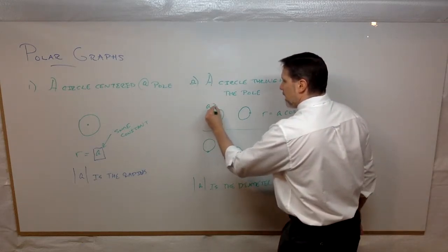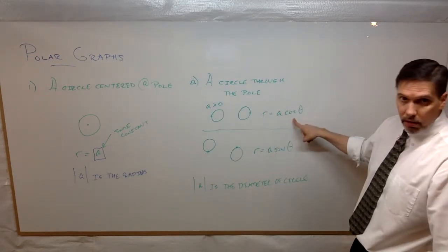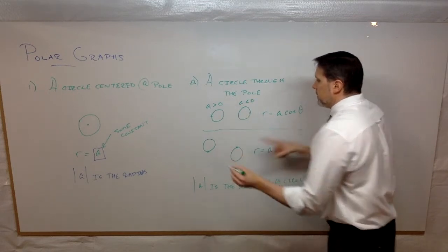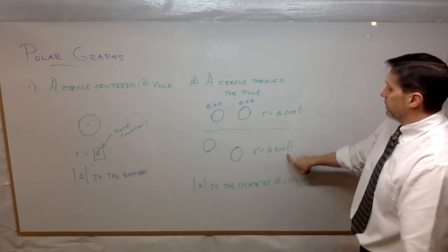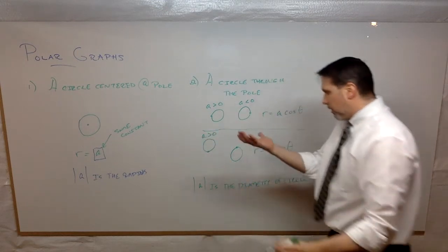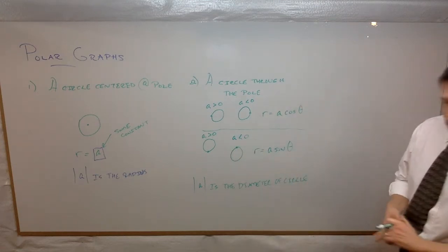If a is positive, your circle will be to the right, assuming you're going with cosine. If a is negative, it goes to the left. Same thing down here. If you're using the sine, if a is positive, it's above the pole. If a is negative, it's below the pole.